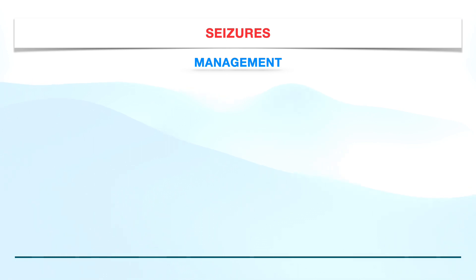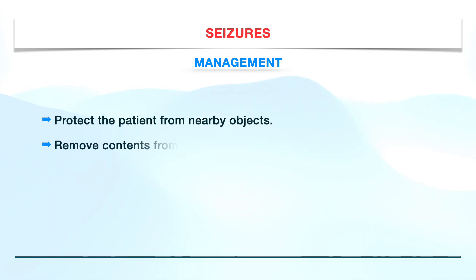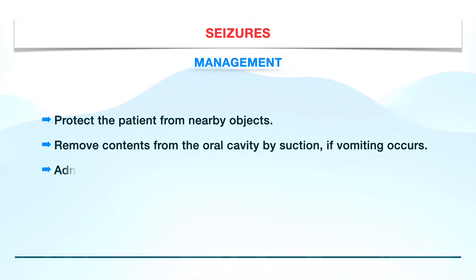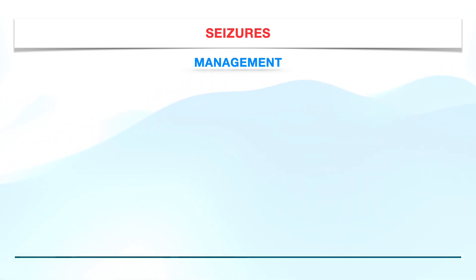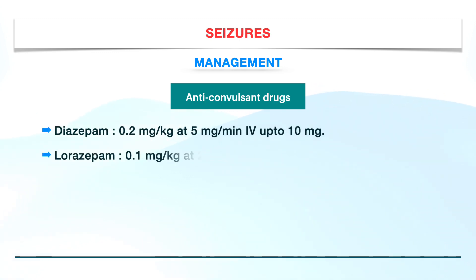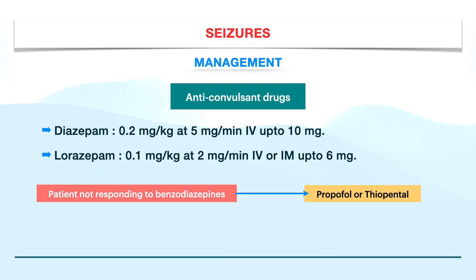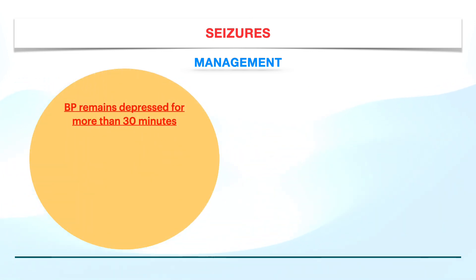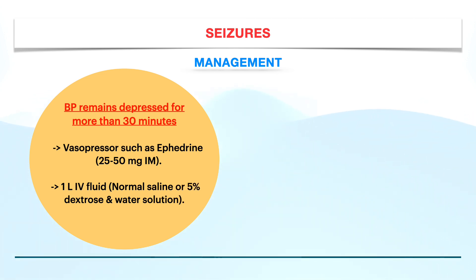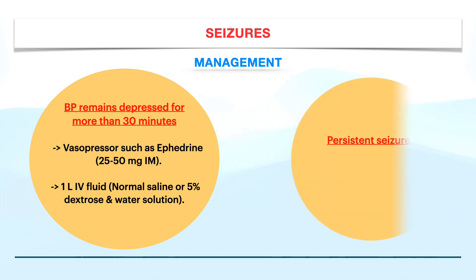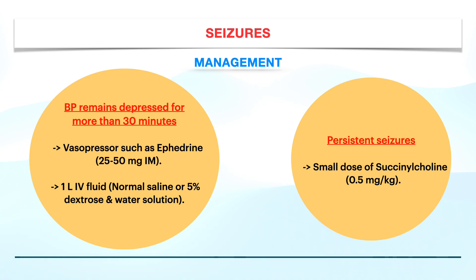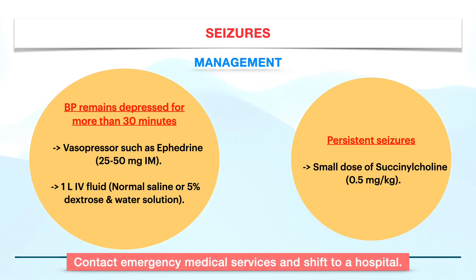In case of seizures, the patient should be protected from nearby objects, and if vomiting occurs, the oral cavity should be suctioned to remove any contents. This is followed by oxygen administration and drug therapy. Anticonvulsants such as diazepam and lorazepam are the drugs of choice for the management of seizures. For patients not responding to benzodiazepines, propofol or thiopental is recommended. Basic life support measures should be started if necessary, and if blood pressure remains depressed for more than 30 minutes, vasopressors such as ephedrine or IV fluids should be given to elevate blood pressure. Vasopressors should be used only when the doctor is well trained in their administration and in the recognition and management of associated complications. In case of persistent seizures, a small dose of succinylcholine can be administered. Emergency medical services should be contacted and the patient shifted to a hospital.